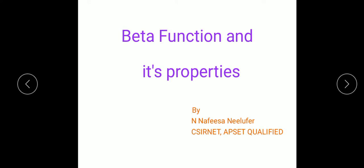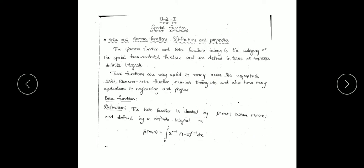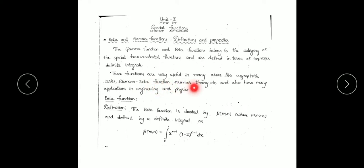Let's discuss the topic of beta functions and their properties. Beta and gamma functions come under the category of special functions, specifically transcendental functions, defined in terms of improper definite integrals. They are called transcendental functions because they involve infinite series. These functions are very useful in many areas like asymptotic series, Riemann zeta function, and number theory, and also have many applications in engineering and physics.